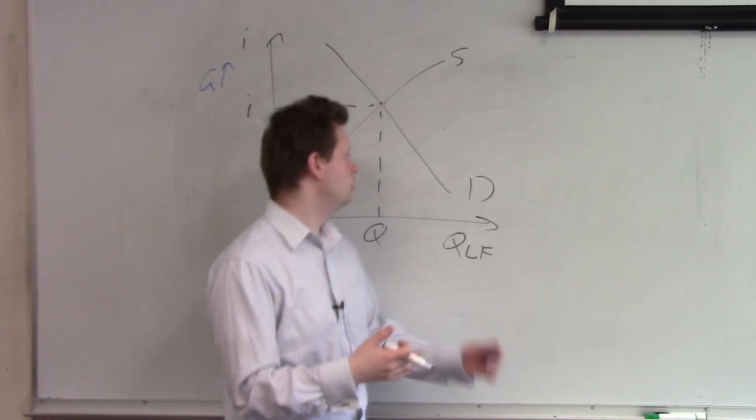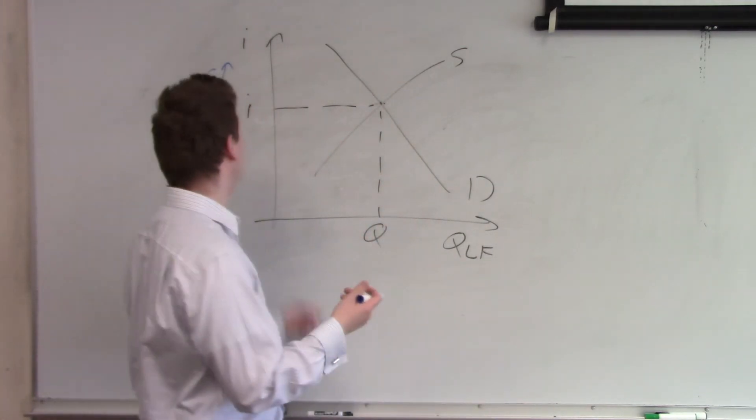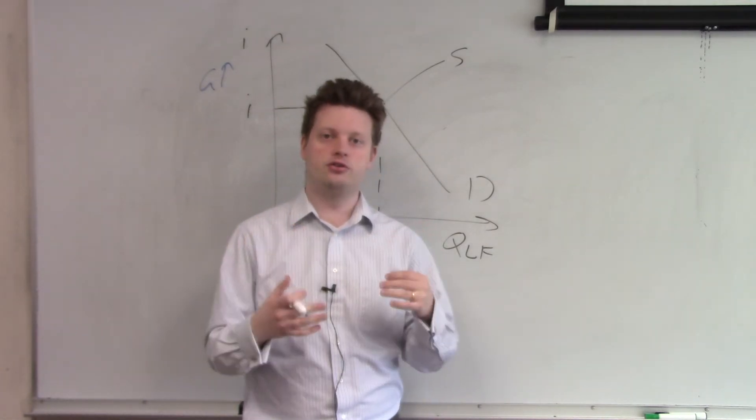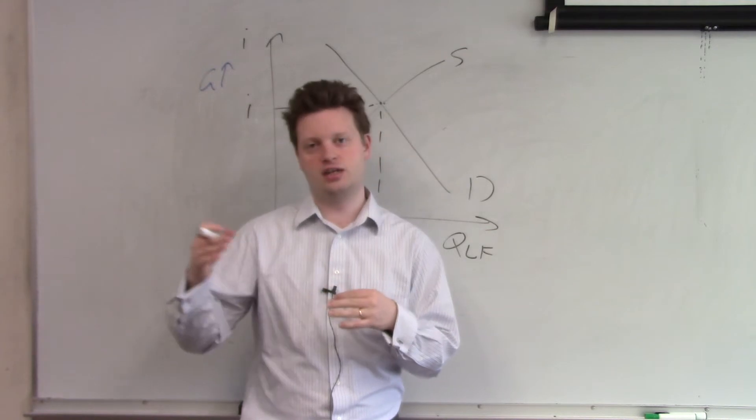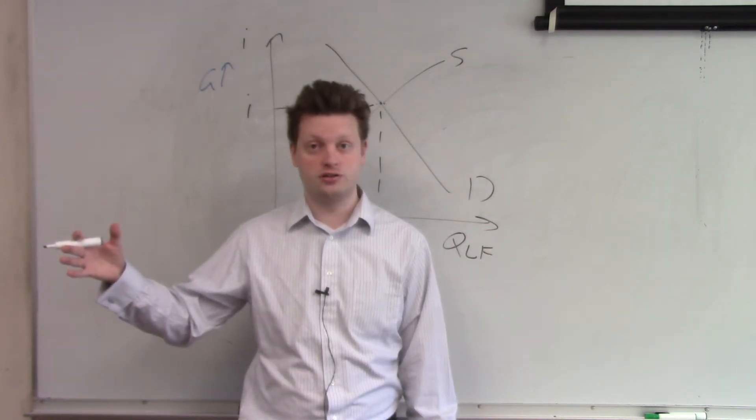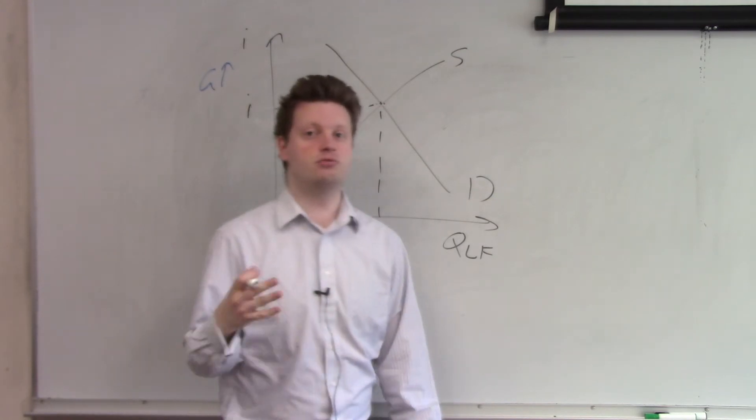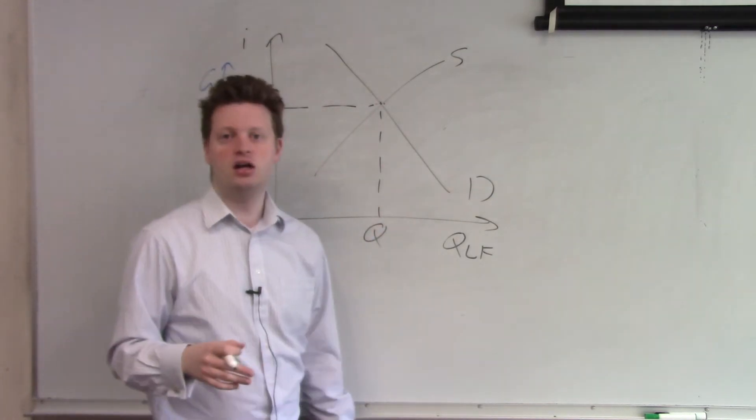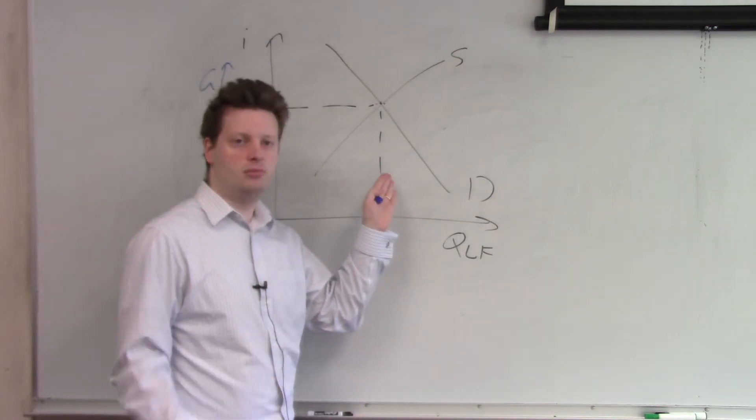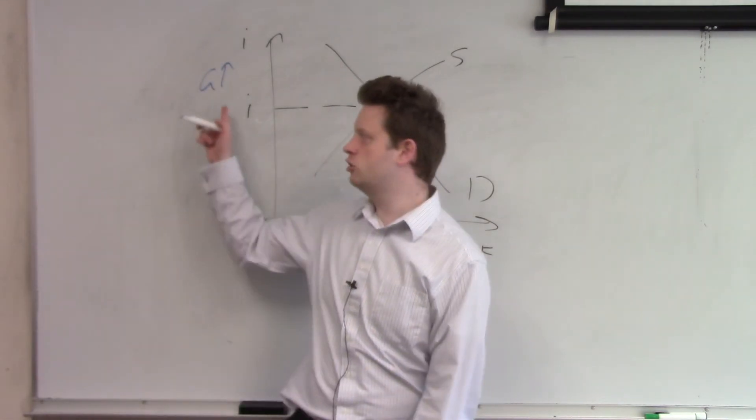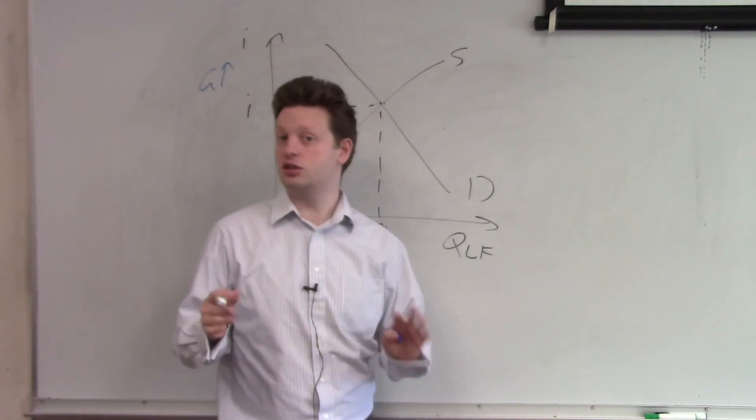So if you go to the loanable funds market, what will happen is if government spending increases, then households are able to save using government bonds. And households want to save using government bonds rather than going to the private market and give the money to firms, which potentially have some risk attached to it, whereas the government has no risk attached to it in this model.